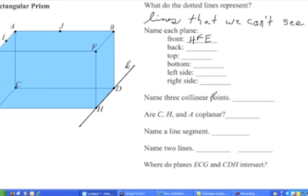Now name three collinear points — we just talked about those. A, I, E is one set and A, J, B is another. Just pick three collinear points from those options.